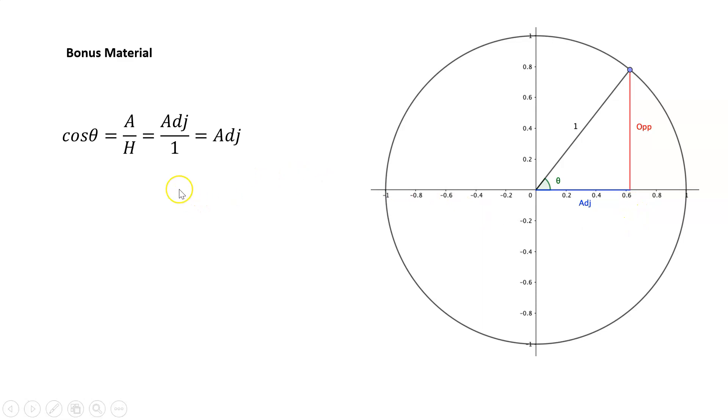Now if I consider cos of theta from this triangle, cos of theta is the adjacent over hypotenuse. Our hypotenuse is 1, so our cos theta is just equal to this blue line, the value of this blue line as it changes.